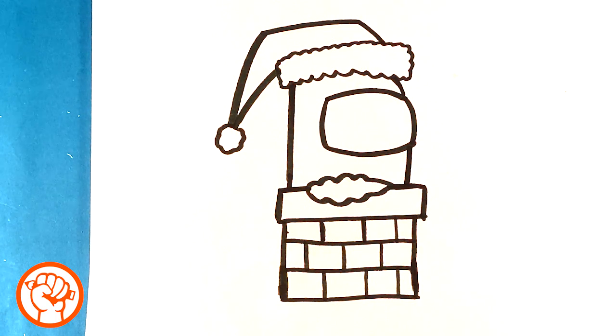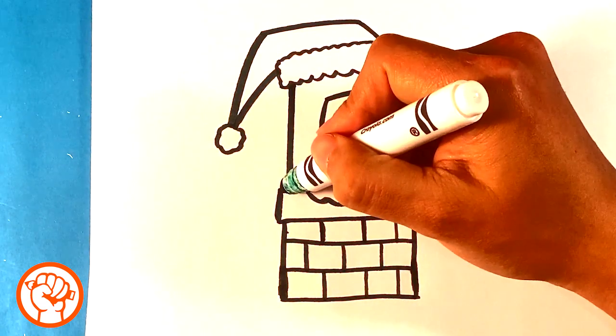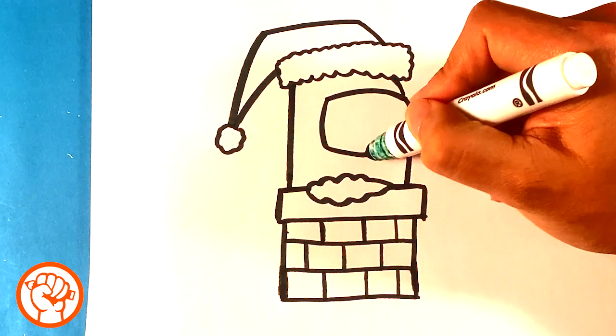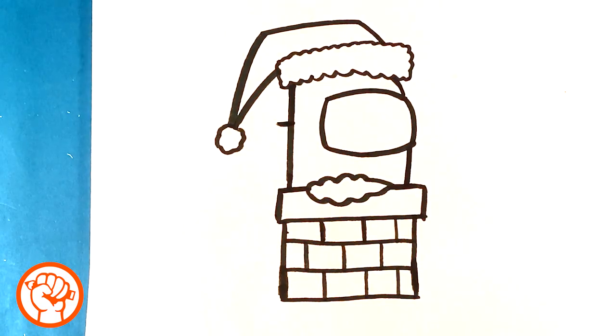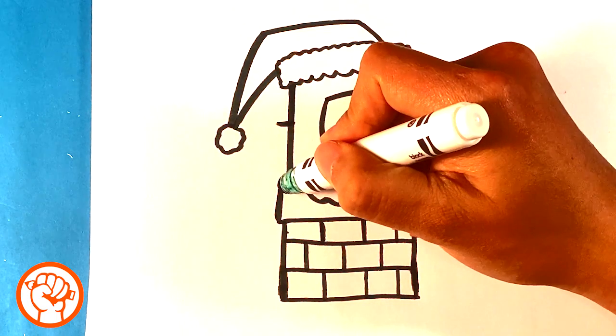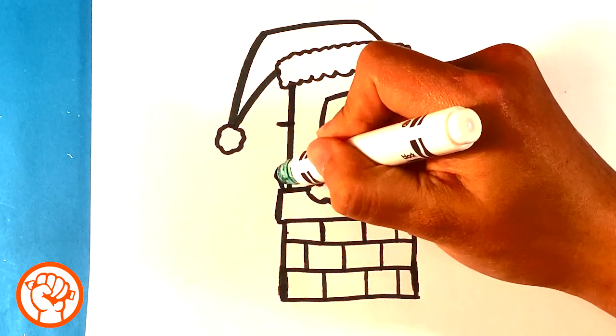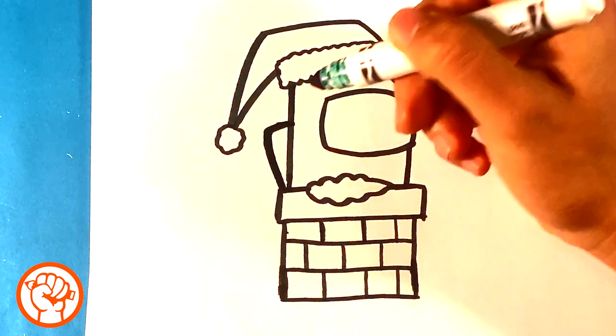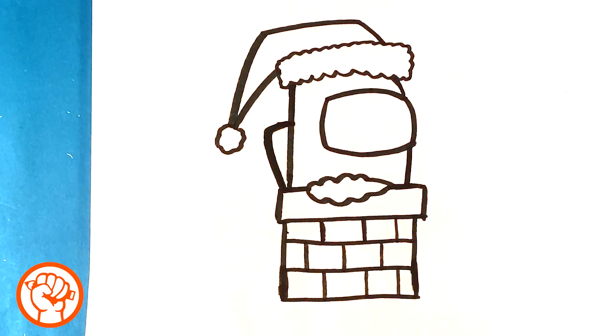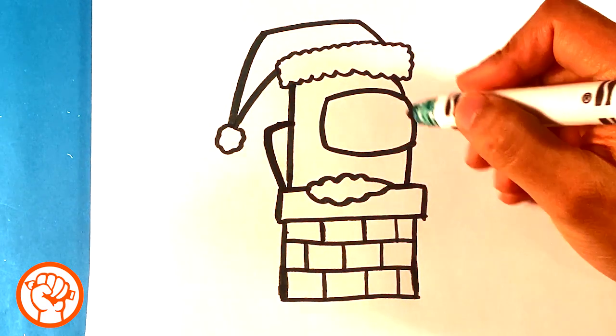So now we have like this Santa in the chimney. You can draw his bag here. So from here to here, halfway, over here, mark it on his back, the backpack. And what I'm going to do is I'm going to start down here. And I'm going to have it like his backpack is stuck in the chimney, like he's totally stuck.